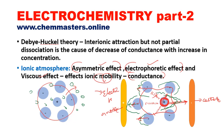The third effect is the viscous effect. Every medium has some viscosity, and whenever we apply an electric field, the ions experience a drag from the viscous effect of the medium in which the electrolyte is taken. These three important effects affect the ionic mobilities of the electrolyte and vary its conductance.